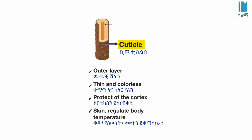The cuticle is the outer layer of the hair shaft. It is colorless and it protects the cortex.